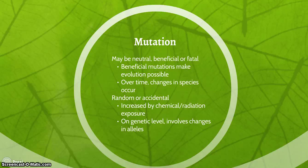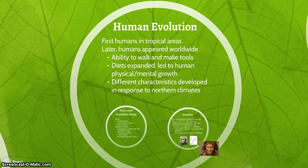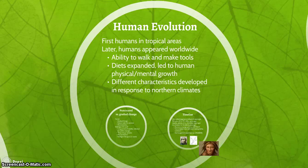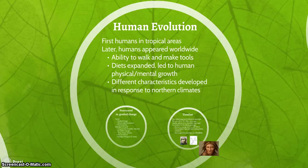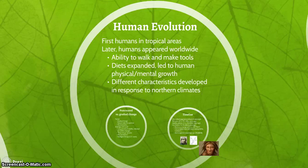On the genetic level, mutation involves changes in the alleles. In terms of human evolution, the first humans arose in tropical areas. Later, humans appeared worldwide. They had the ability to walk and make tools. Their diets expanded, which led to human physical and mental growth. One of the major ways that their diets expanded was that humans made the switch to being carnivores, which allowed them to more easily get the nutrition they needed to maintain an increase in mental growth.